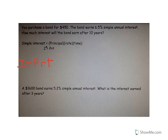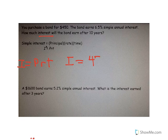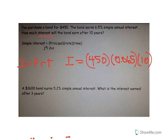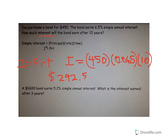We plug in the values. The interest equals the principal, which is $450, times the interest rate written as a decimal — 0.065. You could write it as 6.5 and divide by 100, but writing it as a decimal is simpler. Then times 10 years. When you multiply those numbers together, you get $292.50.